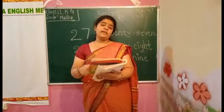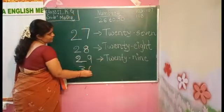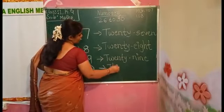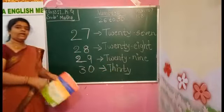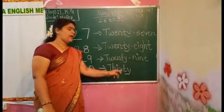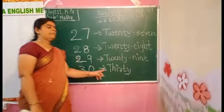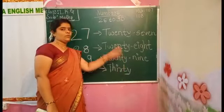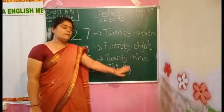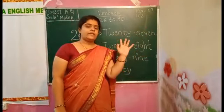After 29, which number will we get? That is 30. How we have to write the number 30? 3, 0 — 30. The spelling of 30 is T-H-I-R-T-Y. How we have to read the number 30? T-H-I-R-T-Y. 3, 0, 30. The number name of 30 is T-H-I-R-T-Y. When you know the number name of 30, you can write easily 31 to 39 numbers.